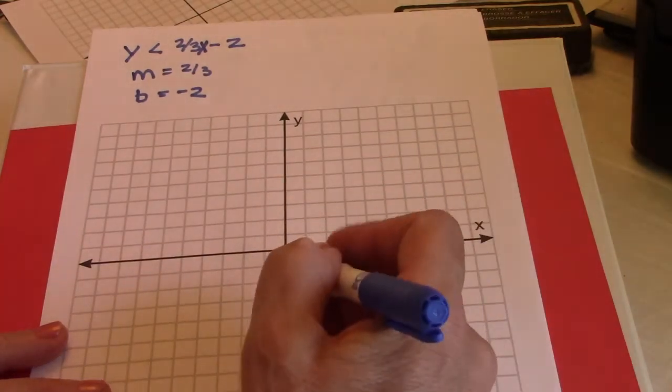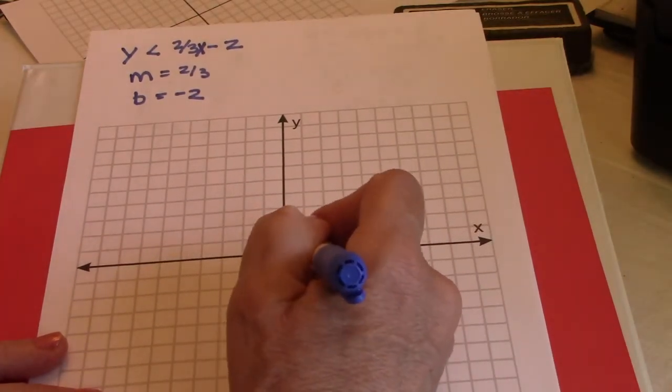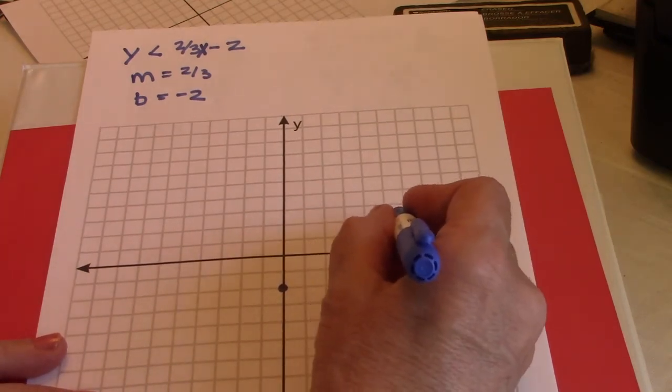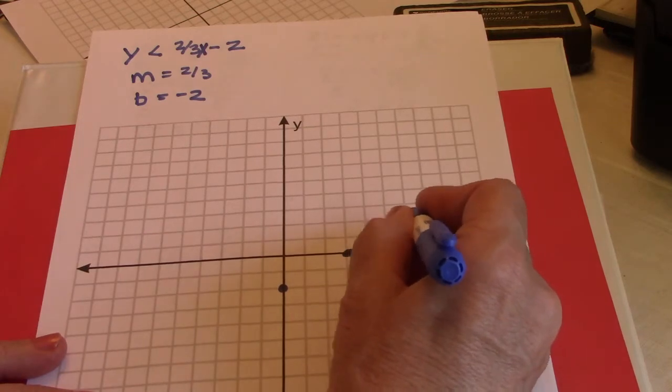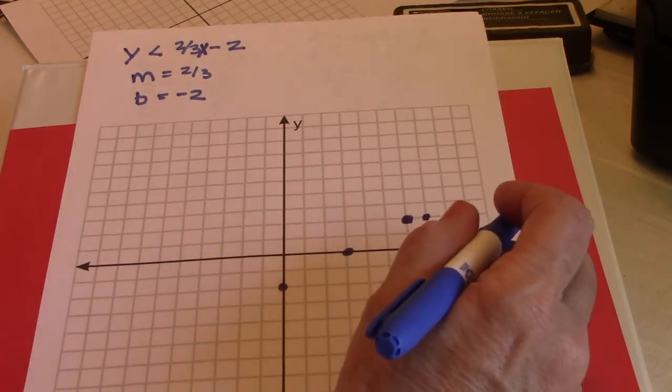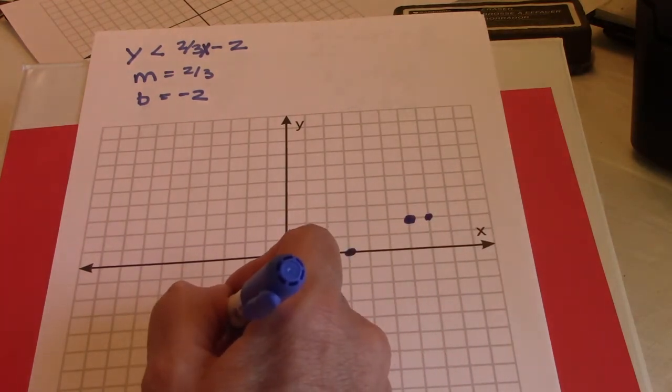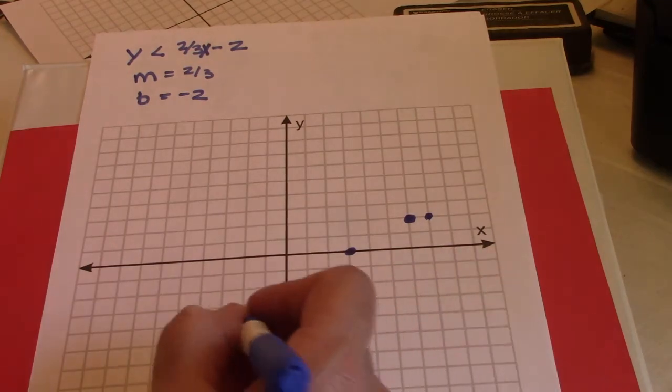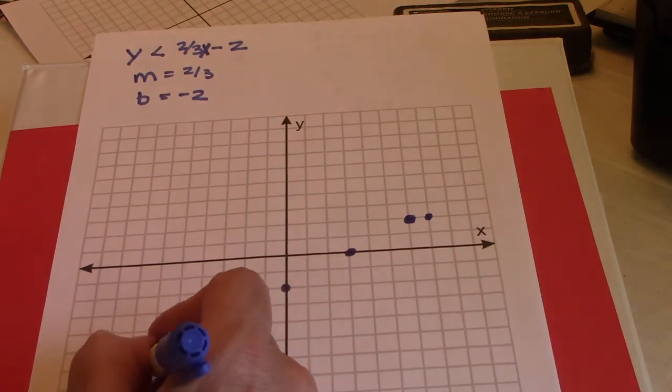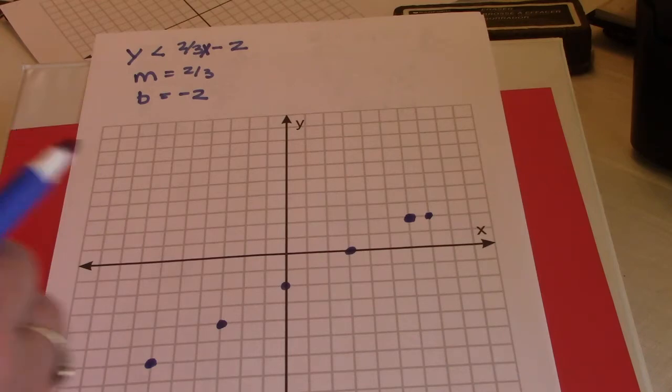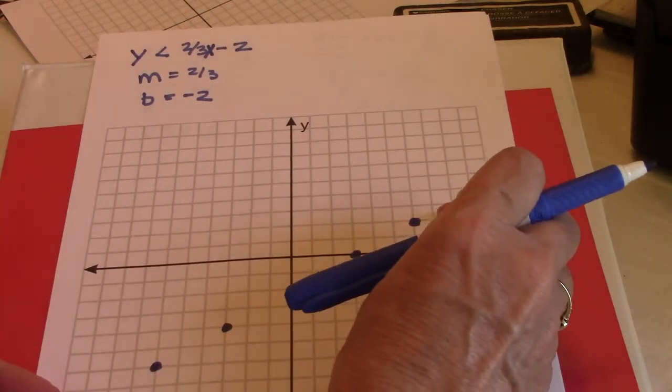My slope is 2 thirds, so it's positive 2 over 1, 2, 3 to the right, positive 2 over 1, 2, 3 to the right. Or it is negative 2 over 1, 2, 3 to the left, negative 1, 2, 3 to the left. Because remember, a negative over a negative is a positive, so that will work.